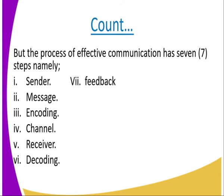The process of effective communication has seven steps. One, the sender must get the information ready. Two, the message. Three, encode that message. Four, use the channel. Five, there is the receiver on the other side. Six, the receiver decodes the message. Seven, you get the feedback. So: sender, message, encoding, channel, receiver, decoding, and feedback.